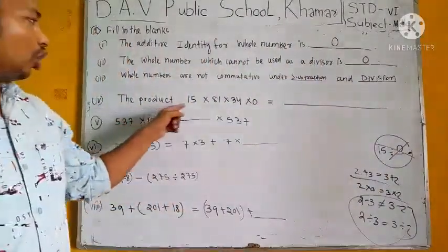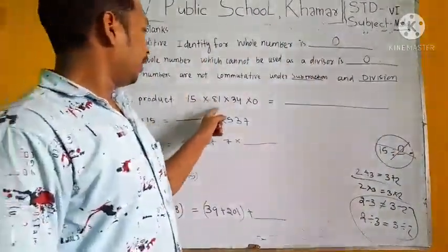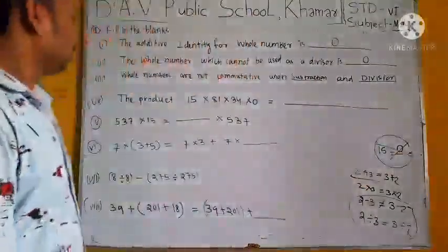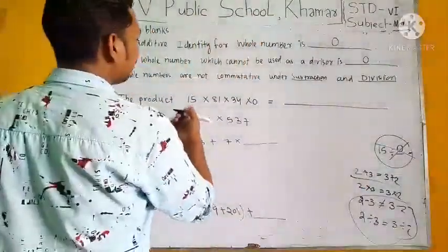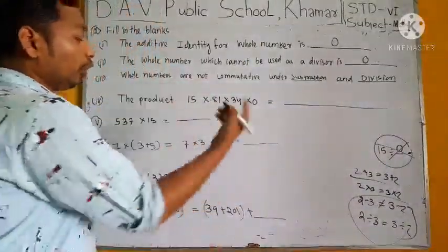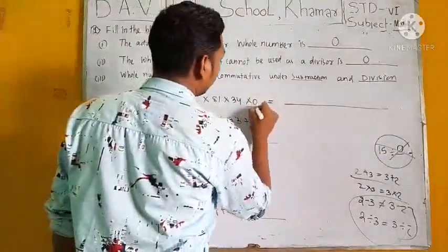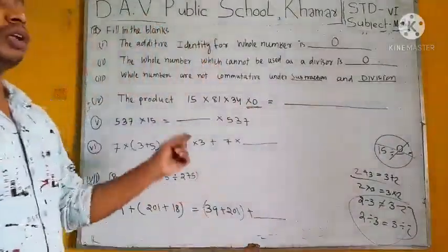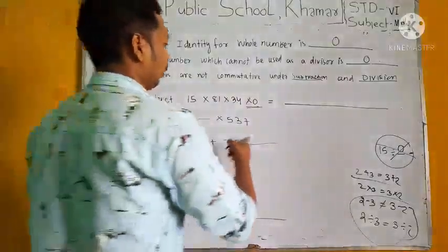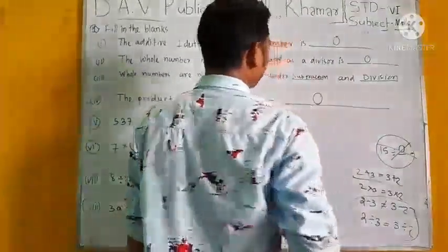The product of 15 into 81 into 34 into 0 equal to... Look at here. If we multiply all these numbers, we know that if we multiply 0 with any number, the number becomes 0. What is our answer? That is 0.